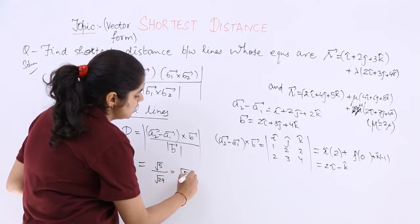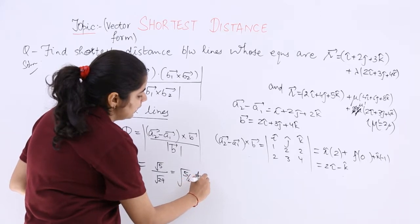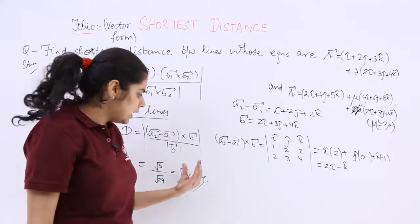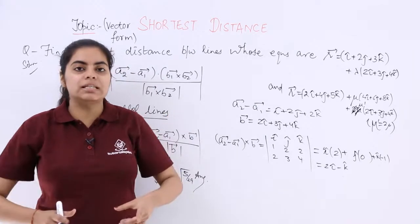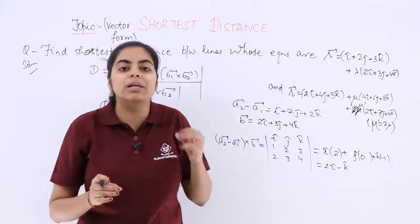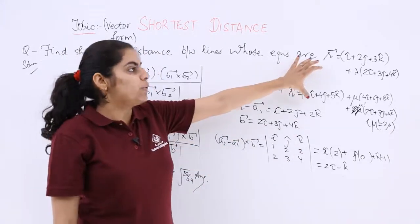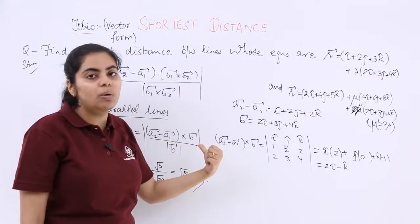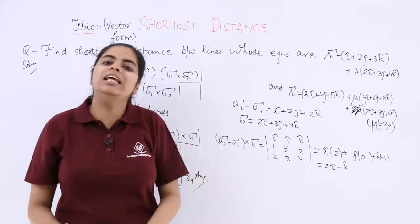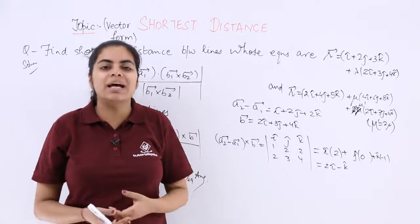So what is the shortest distance? Root 5 over root 29. And that is the answer. So you can write root 5 over root 29 units. Firstly, please do not have a blind approach. See the question properly, know which formula to be used, and then definitely you can move about using the formula and solving the question.